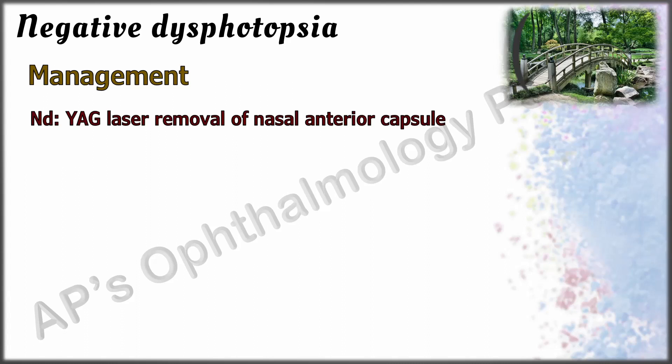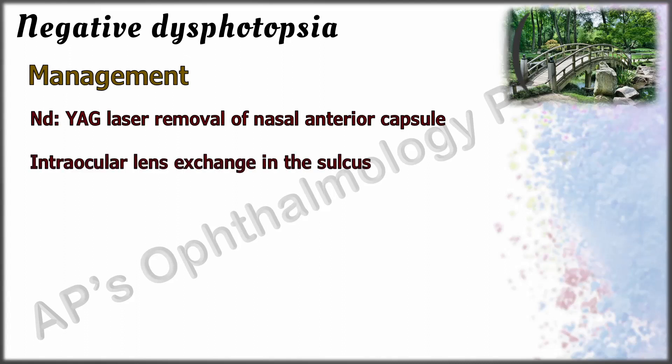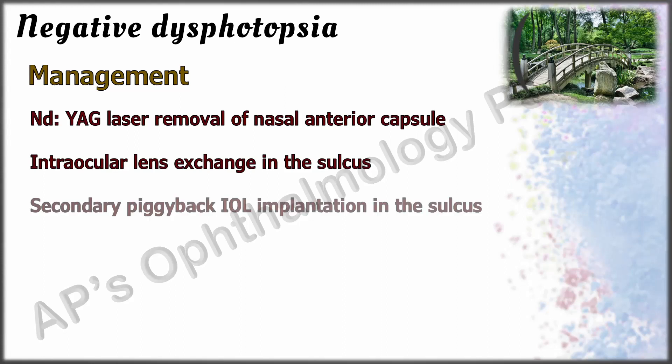YAG laser nasal anterior capsulotomy is the simplest and safest first step to reduce or eliminate negative dysphotopsia and has been reported to be about 60% successful. Intraocular lens exchange into the sulcus decreases the distance between the posterior iris surface and the IOL. Secondary piggyback IOL in the sulcus also positions the IOL closer to the posterior iris.